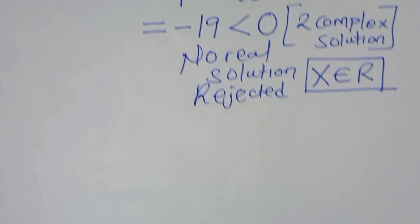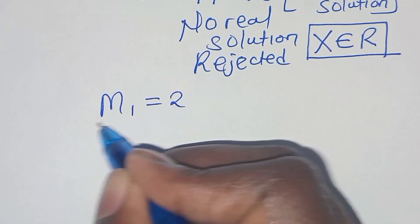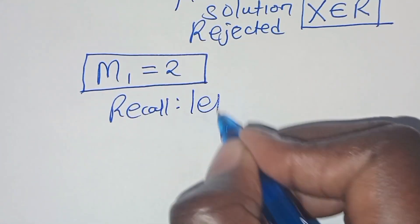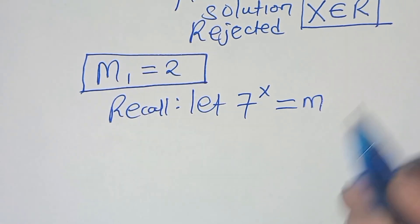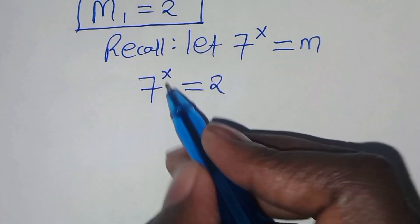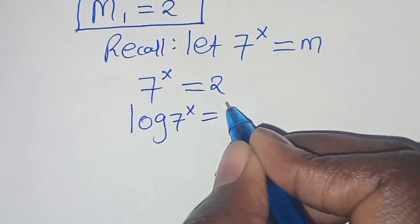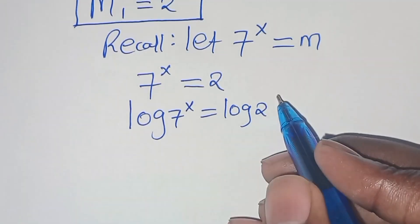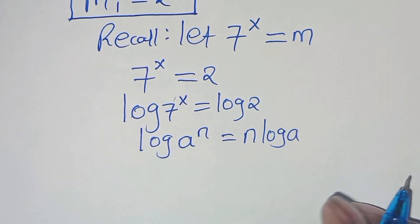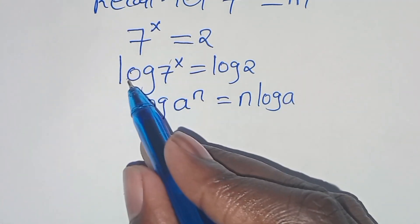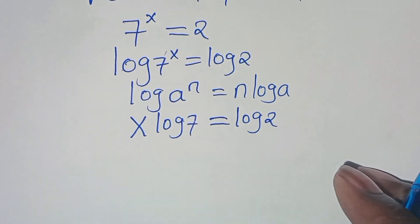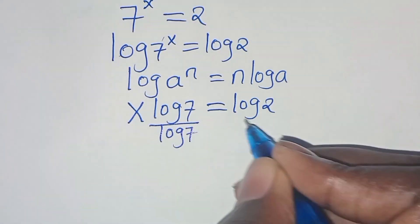So let's proceed with m₁ equals 2. Recalling that we let 7 to the power x equal m, substituting gives us 7 to the power x equals 2. To solve for x, we introduce logarithms on both sides: log of 7 to the power x equals log 2.